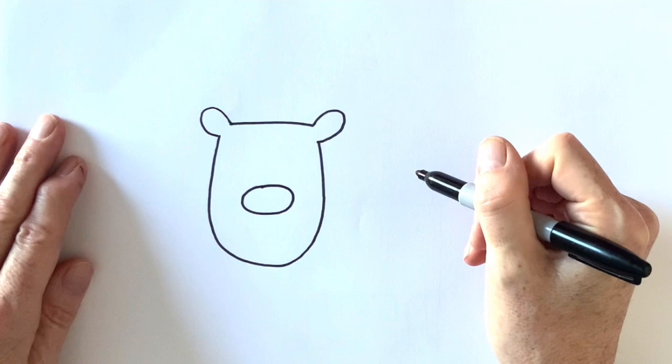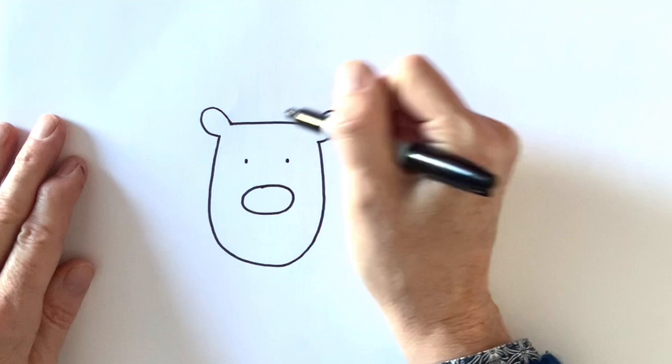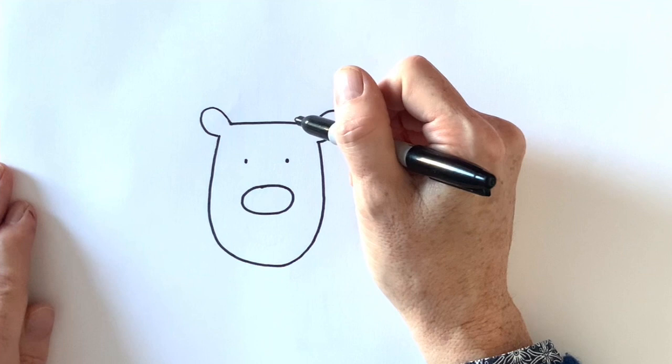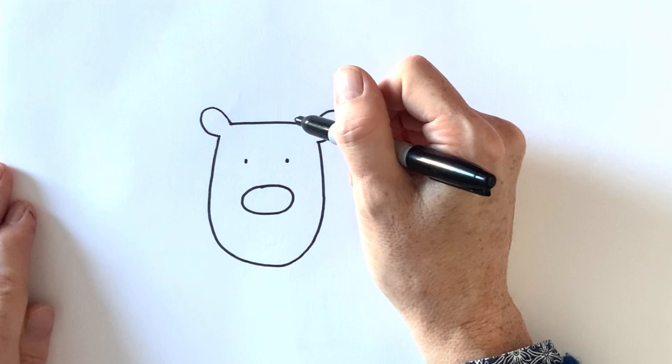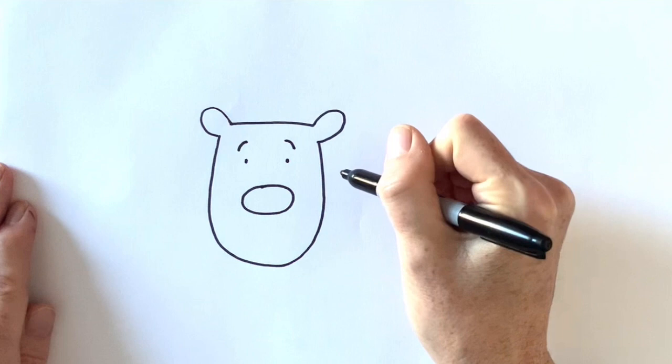And then the reindeer needs two eyes. Again, you can do whatever kind of eyes you like. You might like to draw big shiny eyes or eyes where you can see all the details like the eyelashes. I do like to draw dots for eyes. So I'm going to do two dots like that. And I'm going to add some eyebrows. And then a smiley mouth.